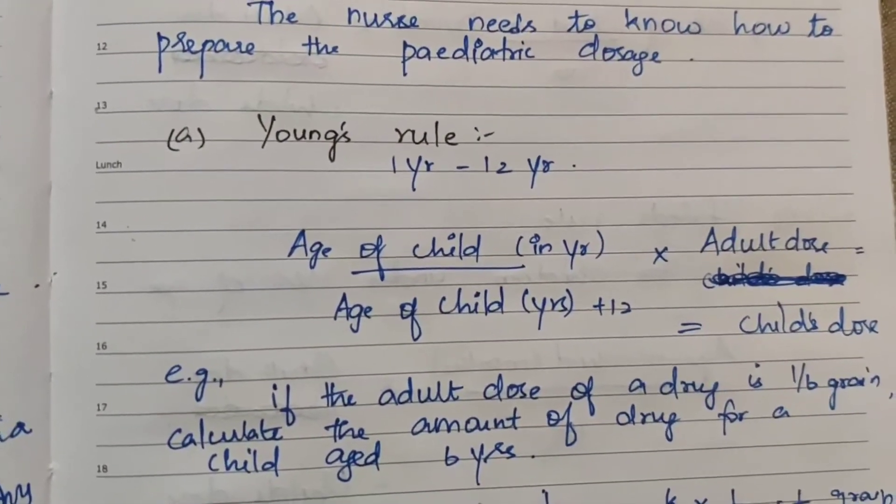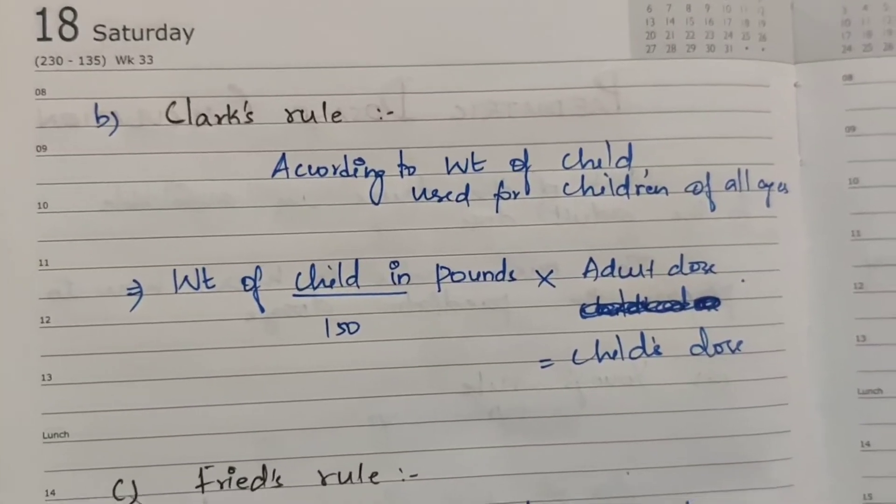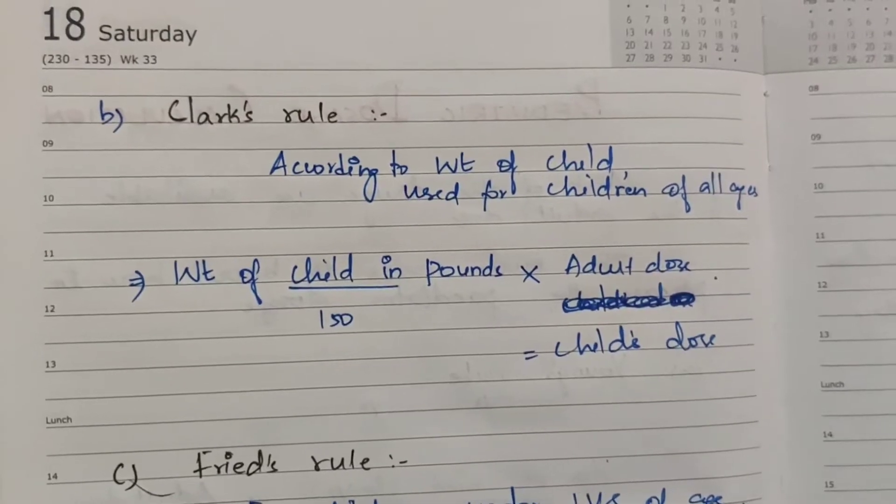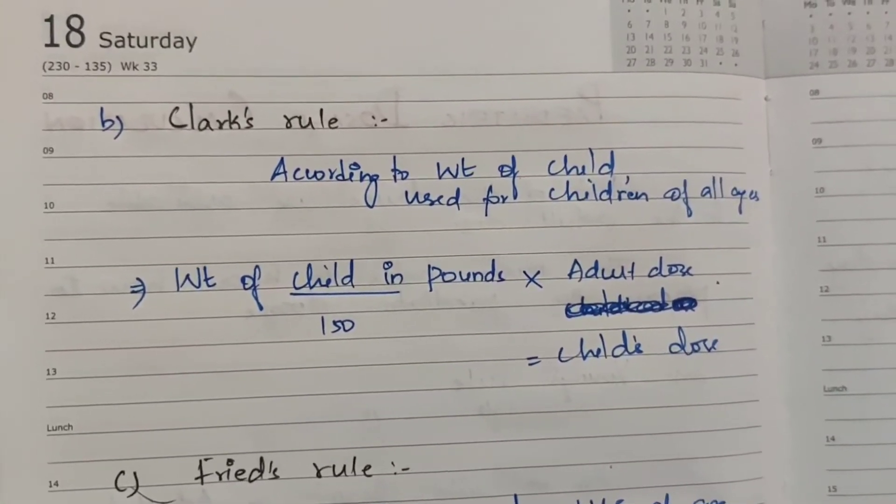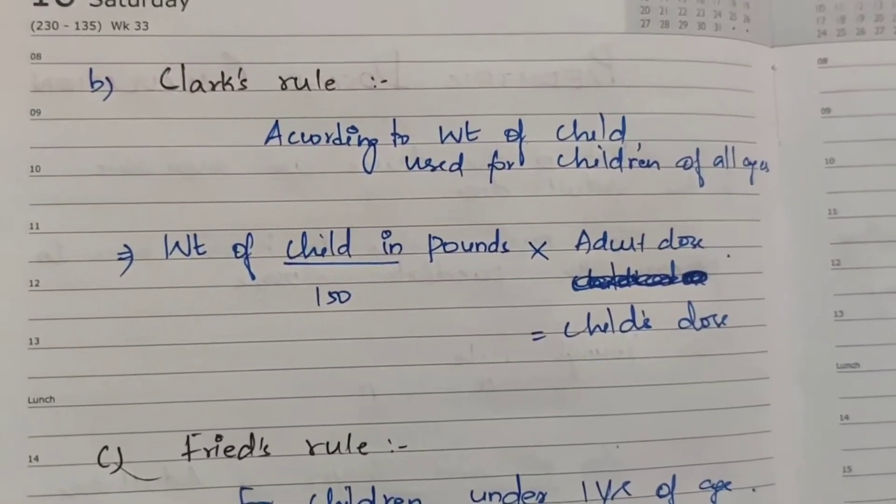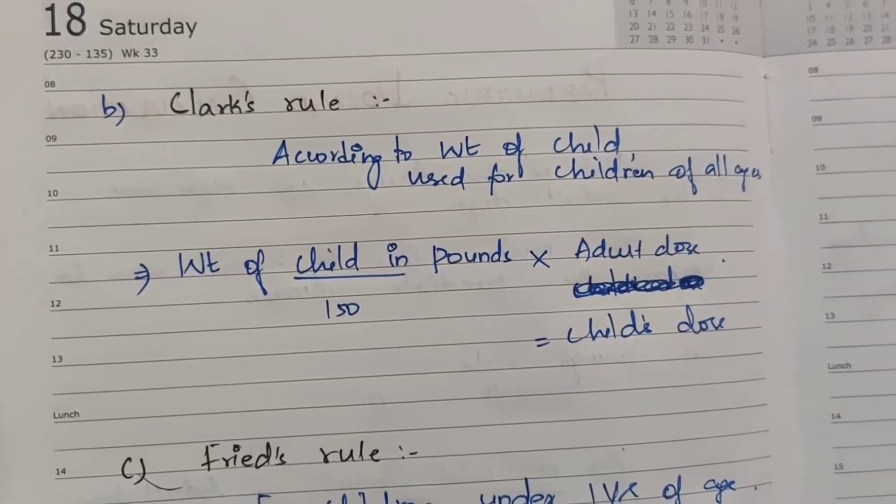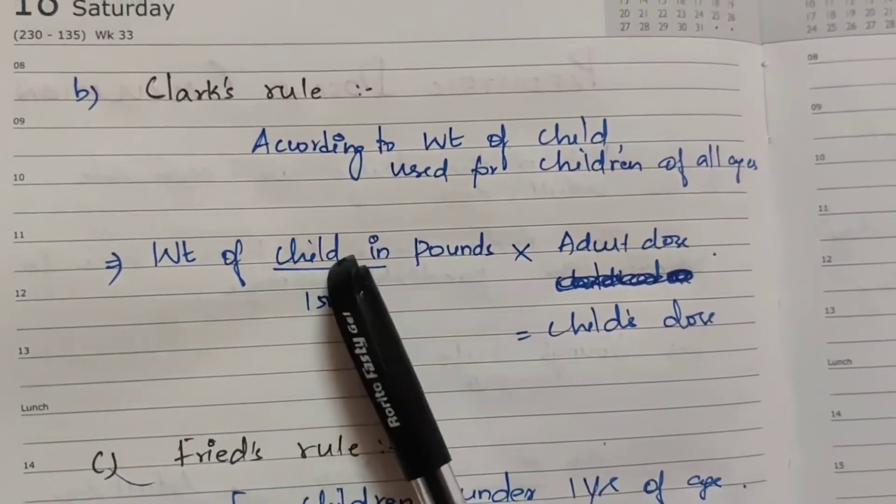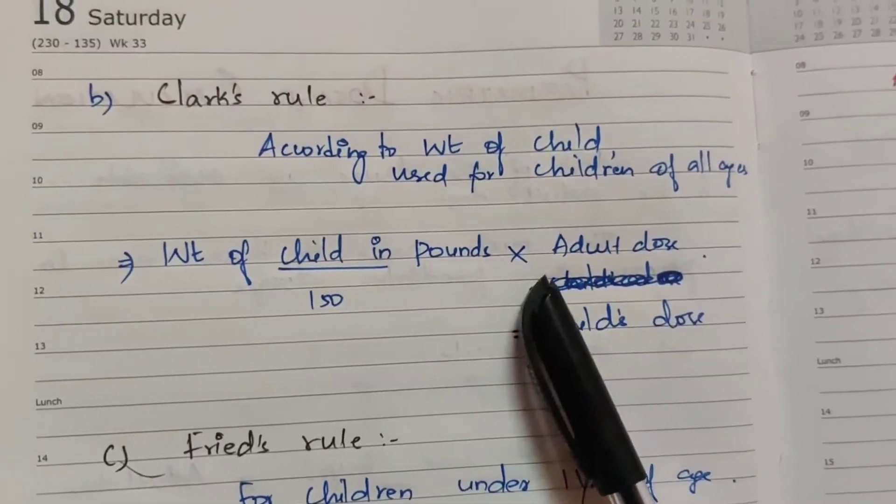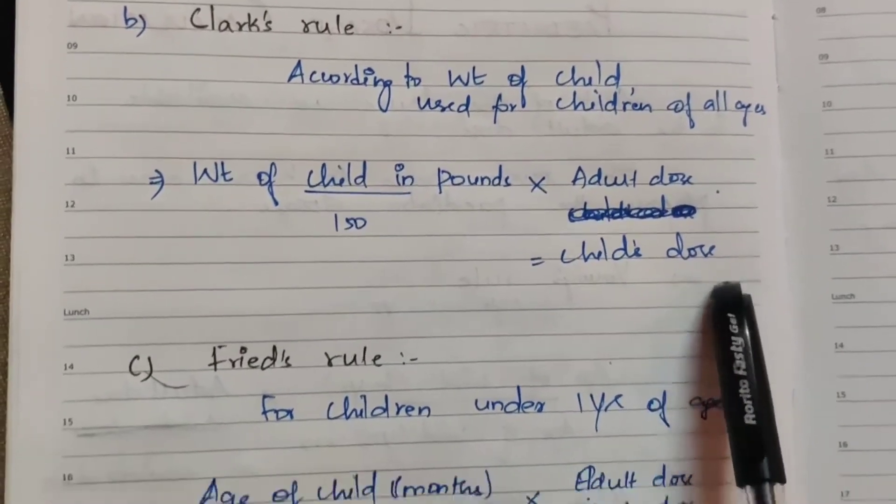So this is the first rule, Young's rule. Next rule is Clark's rule, according to the weight of child. This is for all age group children. The formula is: weight of child in pounds divided by 150, multiplied by adult dose, which equals child dose.